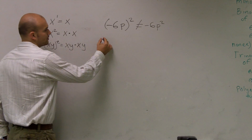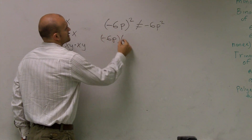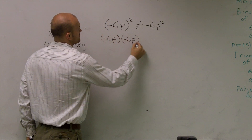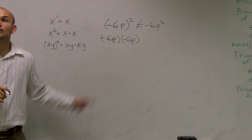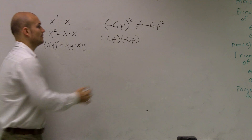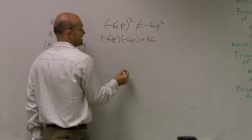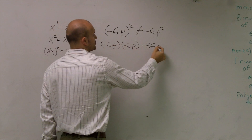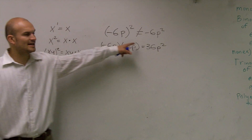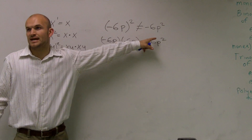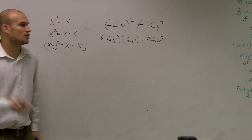Therefore, this really equals negative 6p times negative 6p, which is going to give you a positive 36, and p times p gives you p squared. So that is going to be your correct answer, rather than just negative 6 p squared.